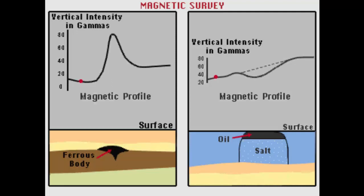Magnetic surveys are primarily carried out to calculate the depth of sediments in a sedimentary basin and to locate major structural features within it. The principle used in magnetic surveys is based on the fact that different rocks have different magnetic properties. Those that have relatively higher magnetism cause very small effects in the intensity and direction of magnetic fields. These effects are measured and mapped in a magnetic survey.